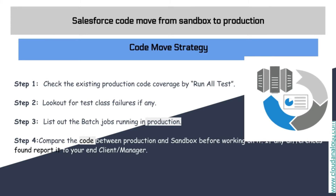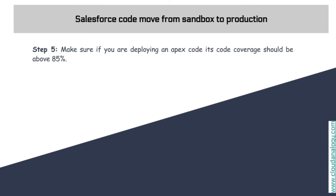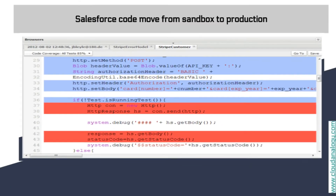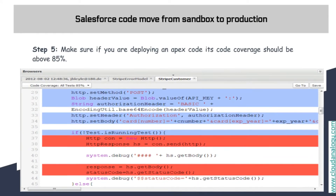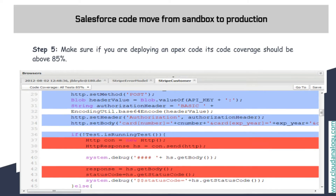Another strong step: make sure that if you are deploying any Apex code, its code coverage is above 85%. It's not only about your own coding experience — we should ensure that other developers who may do a deployment also have a buffer of added code coverage from the existing codebase, so that even if their code coverage is lower, they can still push the code in certain conditions.